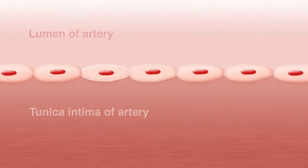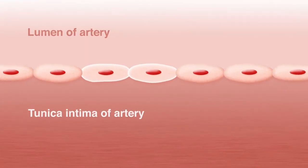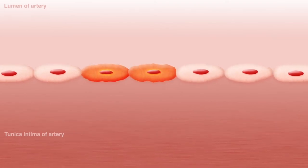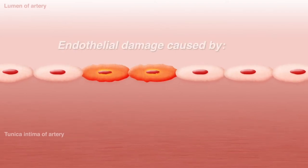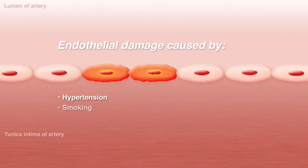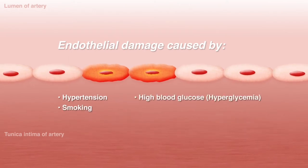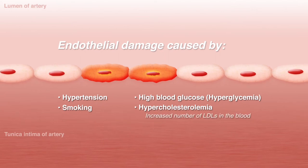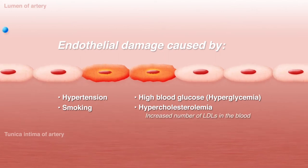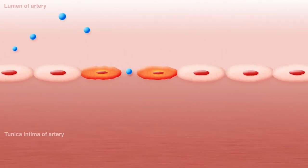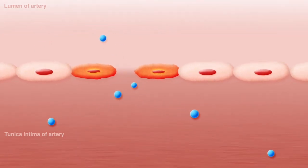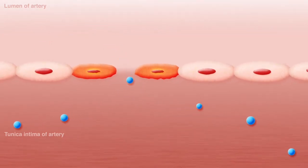The progression of atherosclerosis begins when the endothelial cells of the arterial wall become damaged. This can be caused by hypertension, smoking, hyperglycemia, and hypercholesterolemia, which is an increased number of LDLs in the blood. Endothelial cell damage increases the permeability of the arterial wall, allowing LDLs to enter the tunica intima.